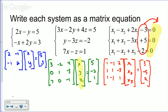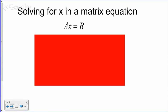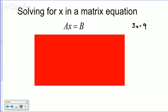Now let's walk through solving for X in a matrix equation. Take a simple equation: 3x = 9. Normally we divide by 3 on both sides. But let's think about why — we're multiplying by 3, so to undo that we multiply by the inverse, which is one-third. Multiplying one-third times 3x on the left and one-third times 9 on the right gives x = 3.